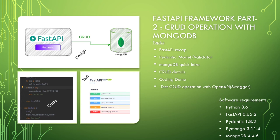For this CRUD operation demo, I've used MongoDB. MongoDB is one of the popular NoSQL databases — it's a high-performing, document-based DB. To compare with traditional RDBMS: the table here is called a collection, and the record in RDBMS is called a document in MongoDB.